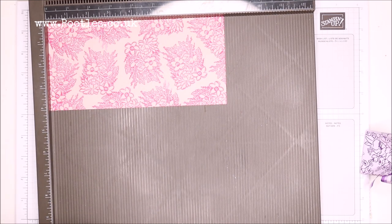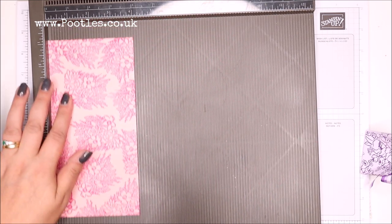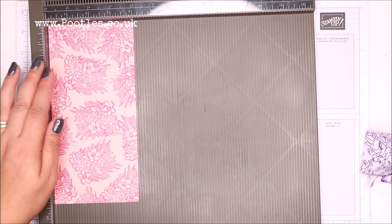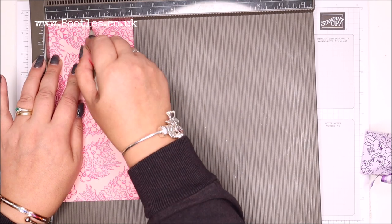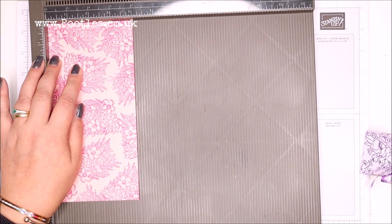Right, where's my scoring tool? Okay. We're going to score the short side first. And I'm going to score it at 2 inches, 5 centimeters, straight down the middle.